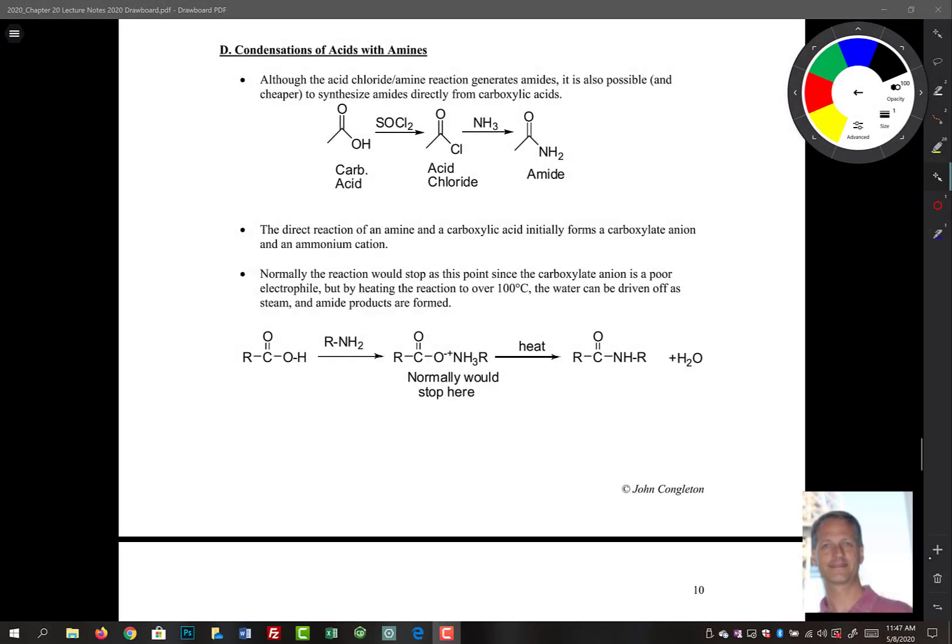Let's look at condensation of acids with amines. Here you can see we have a carboxylic acid reacting with thionyl chloride to give us an acid chloride that then can react to form an amide.